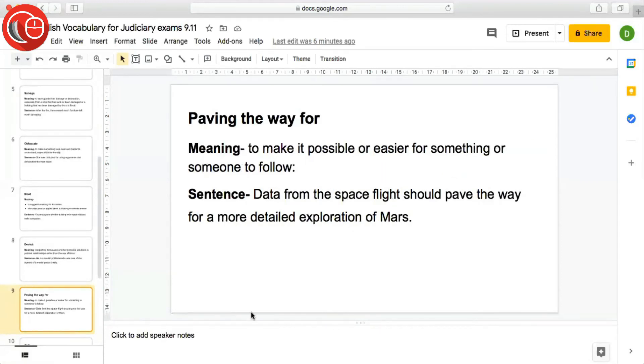The next word is paving the way for. As the word suggests raasta banana, aur cheezein, growth, progress, jisse ho sake toh us cheez ke liye raasta banana, development ke liye raasta banana. Meaning: to make it possible or easier for something or someone to follow. Sentence: Data from the space flight should pave the way for a more detailed exploration of Mars. So jitna bhi data space flight se milega, usse it will make it easier for scientists to have a more detailed exploration of Mars.